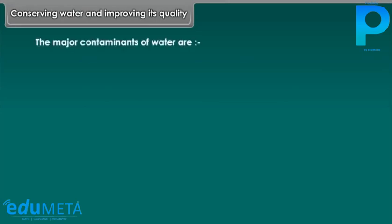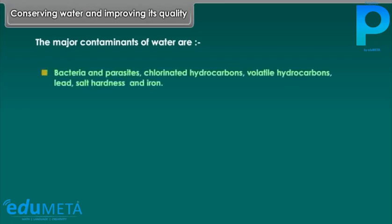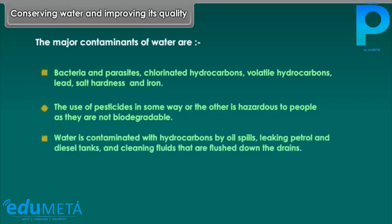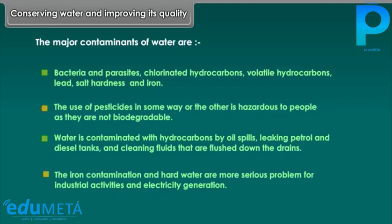Conserving water and improving its quality. The major contaminants of water are bacteria and parasites, chlorinated hydrocarbons, volatile hydrocarbons, lead, salt hardness, and iron. The use of pesticides is hazardous to people as they are not biodegradable. Water is also contaminated with hydrocarbons by oil spills, leaking petrol and diesel tanks, and cleaning fluids that are flushed down the drains.